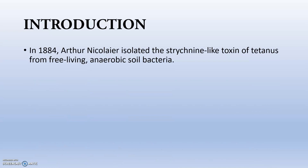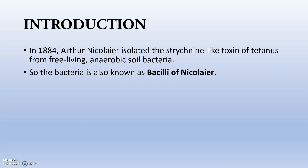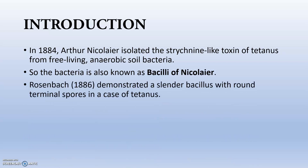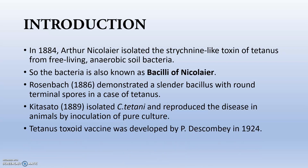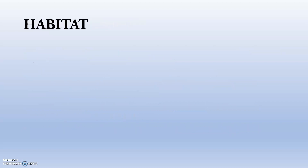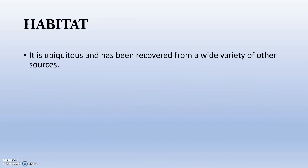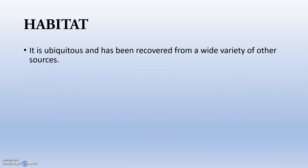Now moving to the species characterization of Clostridium tetani. In 1884, Arthur Nicolaier isolated a strychnine-like toxin of tetanus from free-living anaerobic soil bacteria; the bacterium is known as the Bacillus of Nicolaier — a term important for public service examinations. Rosenbach demonstrated the slender bacillus with round terminal spores in tetanus cases, and Kitasato isolated Clostridium tetani. The tetanus toxoid vaccine was discovered by P. Descombe in 1924, also a commonly asked exam fact.